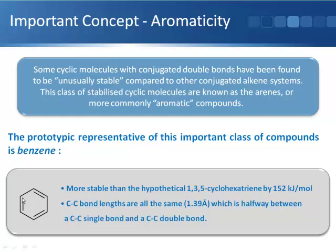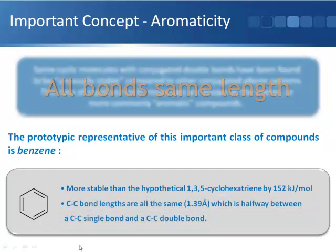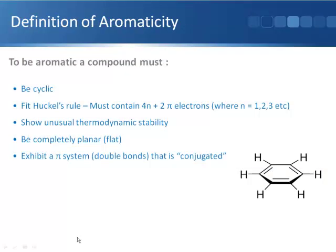The stability calculated for this molecule from having three conjugated double bonds is actually not enough to account for what we actually observe. There's an extra element of stability. Experiments have found that the bond lengths for each of the six bonds in this ring are somewhere between a carbon-carbon single bond and a carbon-carbon double bond, and all the bond lengths are exactly the same.